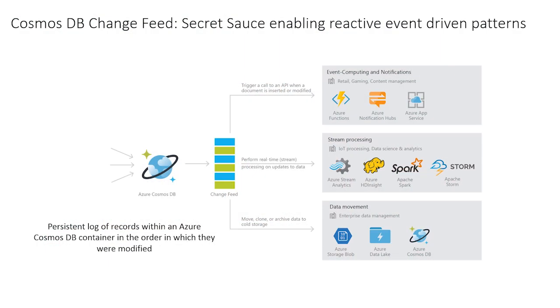So, what is the problem with this Lambda architecture? As new data comes in, there is a double-write problem where you have to write to both your master dataset as well as to your stream speed layer. What if one of the writes fails? That's the common problem of double-writes. And this is where Cosmos DB simplifies this Lambda architecture — through Cosmos DB change feed.